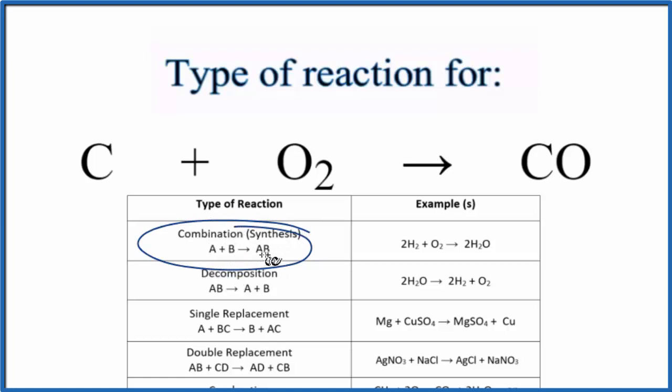So we have A plus B and that comes together, these two things come together to form one new substance we'll call that AB. So that's a combination or synthesis reaction.